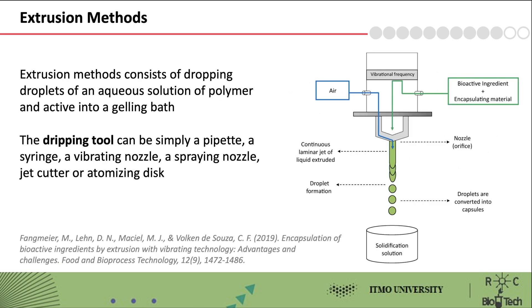Extrusion methods consist of dropping droplets of an aqueous solution of polymer – most often 0.6 to 3% sodium alginate – and the active into a gelling bath. In the case of alginate, the gelling bath is a calcium chloride solution. The dripping tool can be simply a pipette, a vibrating nozzle, a spraying nozzle, a jet cutter, or an atomizing disc.